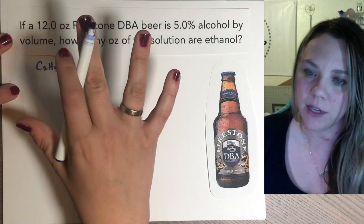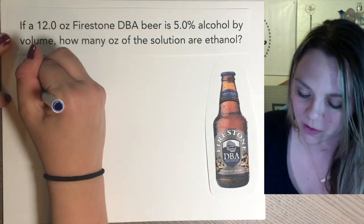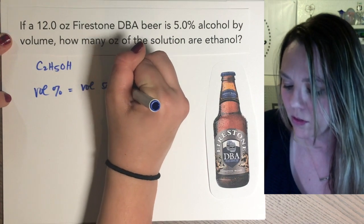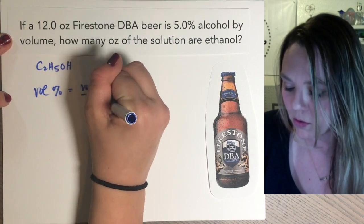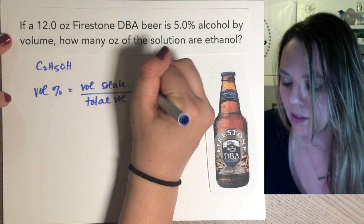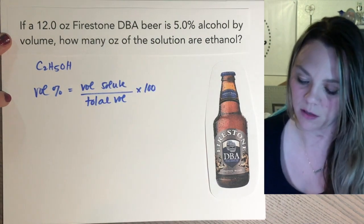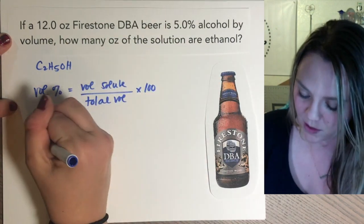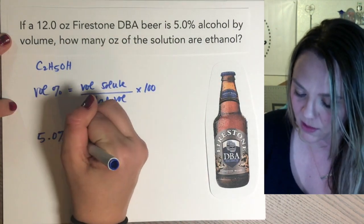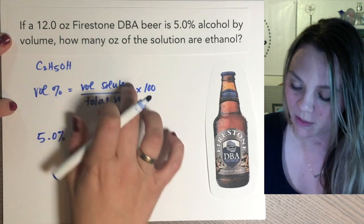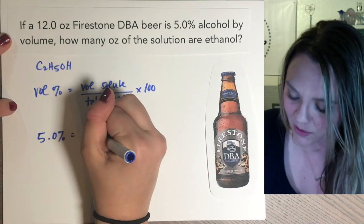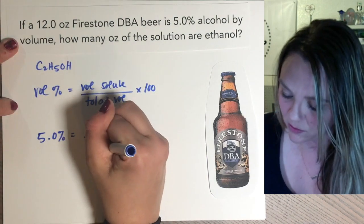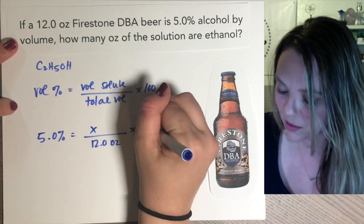So how would I calculate this? I know that my volume percent is gonna be my volume of the solute divided by my total volume times 100. In this scenario I know my percentage, so I can plug that in: I have 5%. My volume of my solute I don't know — that's what I'm trying to find — divided by my total volume of 12 ounces, times 100.